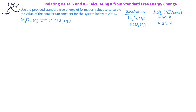Let's see how we could use this relationship between the standard free energy change and the equilibrium constant. In this problem, we're asked to use standard free energy of formation values of compounds to calculate the value of the equilibrium constant for this system at 298 Kelvin. The equation given is that N₂O₄ gas is in equilibrium with 2 moles of NO₂ gas. We're also given the standard free energy of formation values for N₂O₄, which is 99.8 kJ per mole, and NO₂, which is 51.3 kJ per mole.